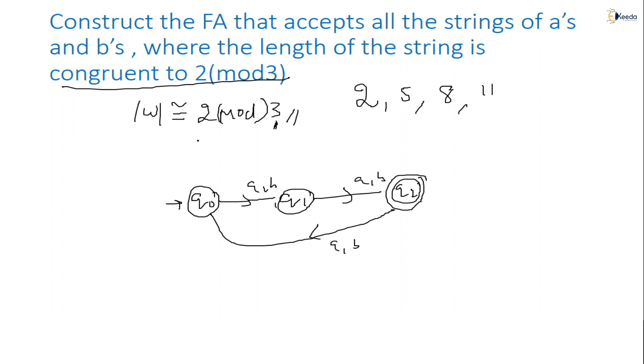Similarly, now 2 modulo 3, 3 states we will get. States will be what? 0 comma 1 comma 2. Now 2 is the final state, correct or not? Yes, we got 2 is the final state.